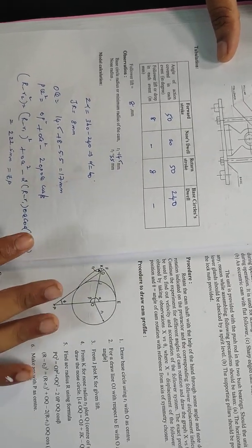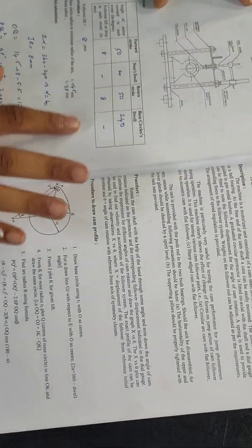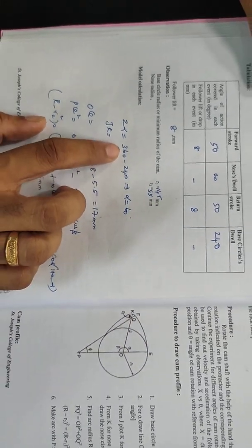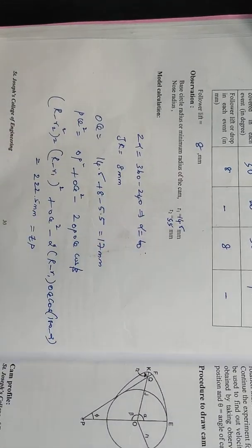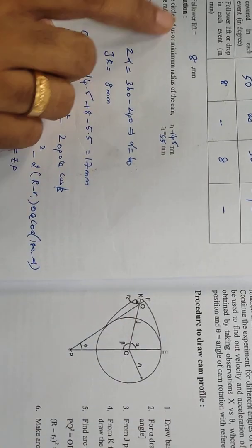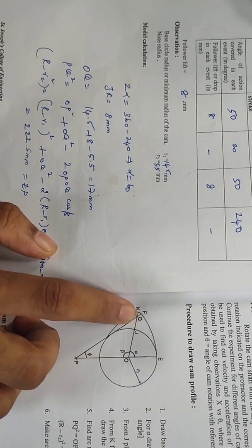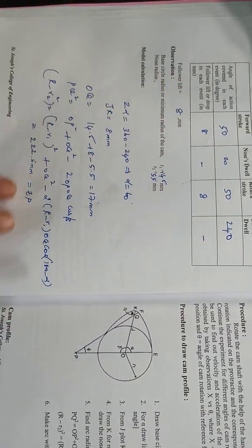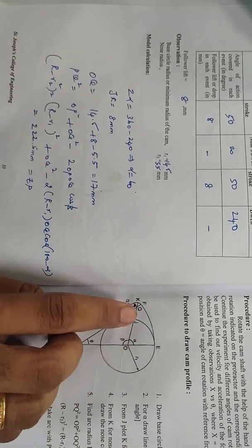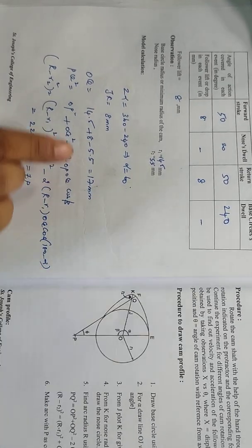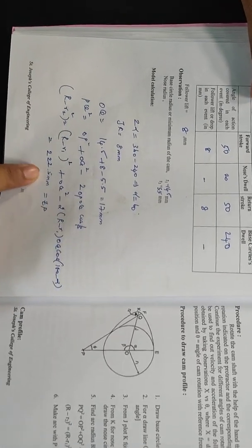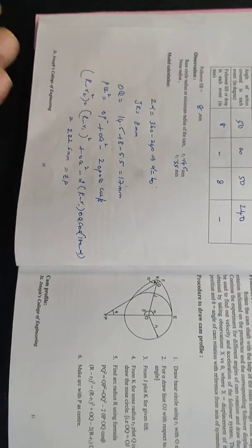Before starting the CAM profile, we do a few calculations. To calculate 2 alpha, we reduce from 360 degrees — whatever 240 degrees we got — so we will be getting alpha as 60 degrees. Note down the value of R1, R2, and alpha. The follower lift is 8 mm. These are the calculations and we will be calculating OQ. OQ — the distance from O to Q — is 17 mm. With the help of the formula, we can determine the radius, that is 225.5 mm. These three data are required for drawing the CAM profile.